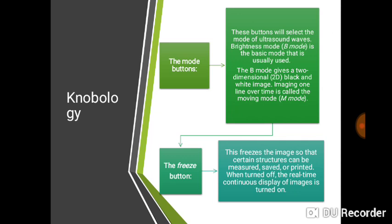You have mode buttons and the freeze button. The mode button allows you to change to Doppler, 4D or 3D (if your machine has it), M mode, B mode, or cardiac mode — whatever mode is available on your equipment. The freeze button makes the image static so you can print or record it.